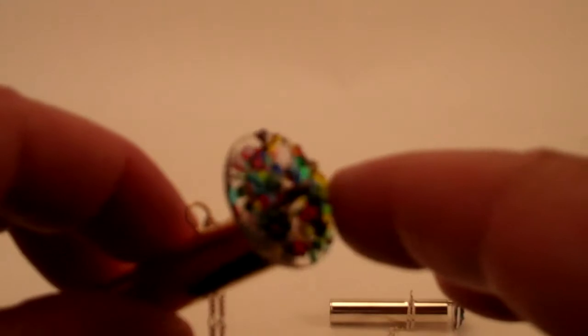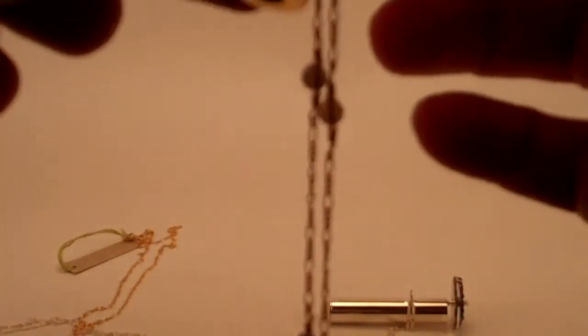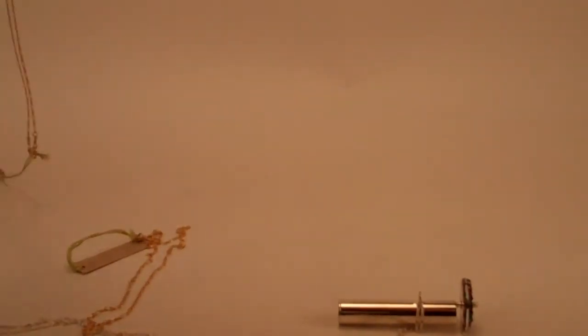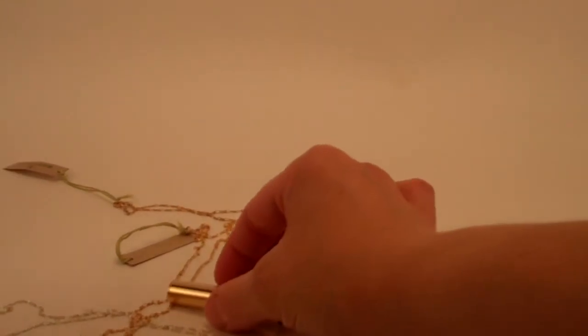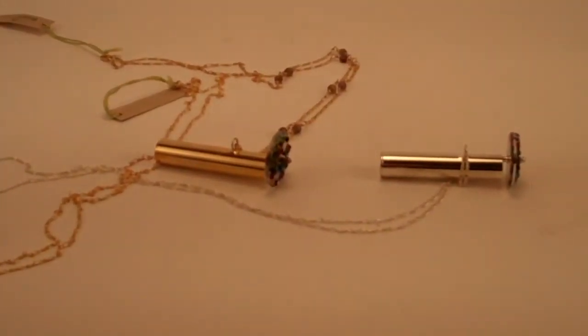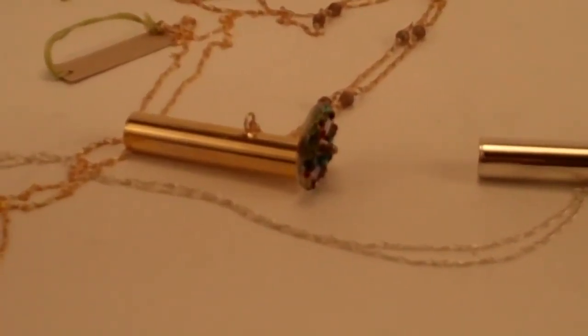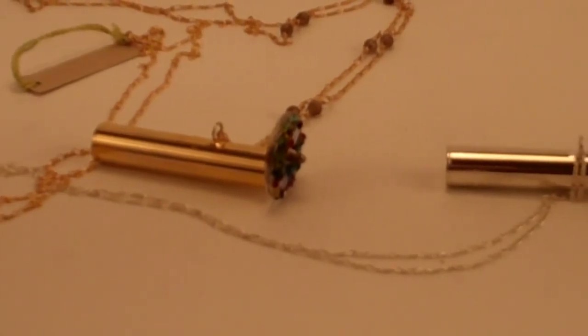But each wheel is hand fused in Lori's kiln, so they each come out slightly differently. A delightful piece of jewelry to wear, a wonderful kaleidoscope to view. And these great kaleidoscope necklaces are available here at Kaleidoscopes2u.